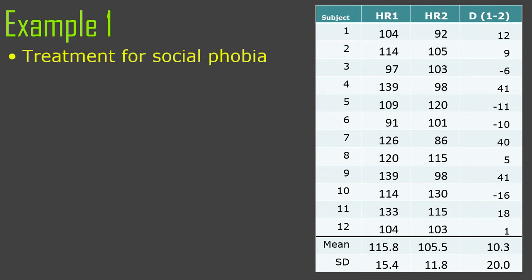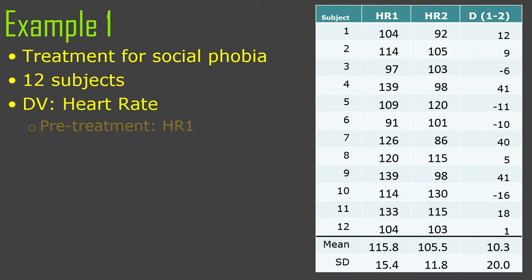It was the example of a treatment for social phobia, some sort of therapy. There are 12 subjects, and the dependent variable is heart rate. Pre-treatment heart rate is HR1. It's pretty standard to measure whatever it is you're trying to reduce before the therapy and then measure it again after. So before the therapy, all 12 participants are put, one by one, into rooms with strangers for a minute or two, and then you measure their heart rate. After treatment, you do the same thing.